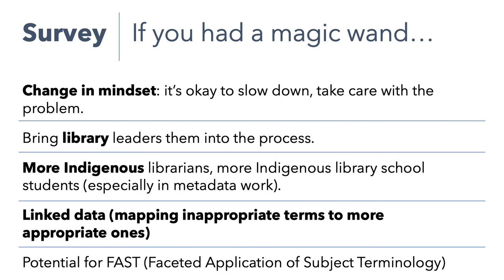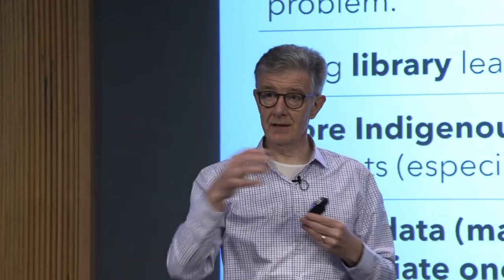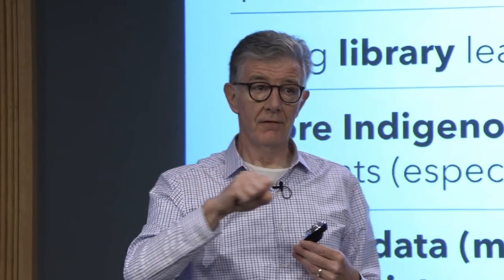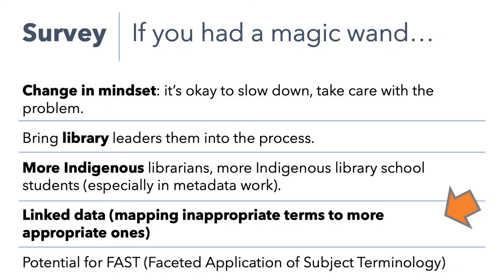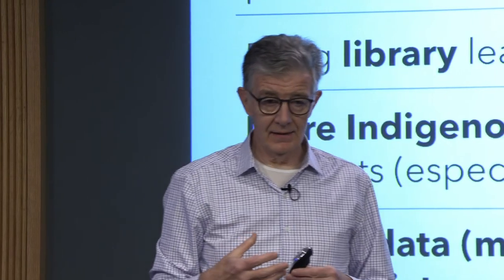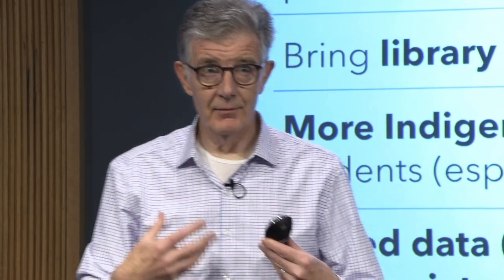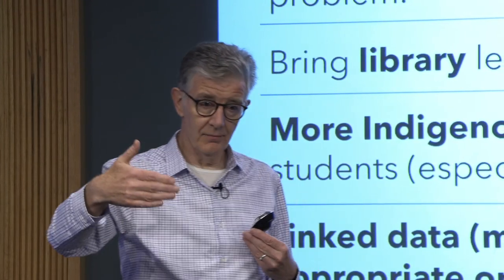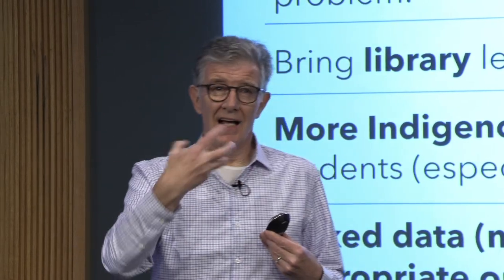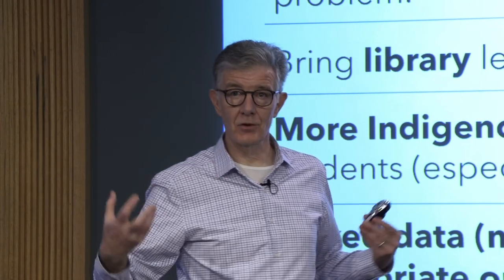Going back to the survey I mentioned, one of the areas identified was this idea of linked data — having more entified data — so that systems and services could be more sophisticated in terms of linking between vocabularies, identifying preferred terms, and doing various things. That's the coming together of these two interests. Linked data mapping inappropriate terms to more appropriate ones: the idea that one way of addressing issues in vocabularies is to systematically begin to map those terms to other terms, but to do that needing an infrastructure where that work can be captured so that it's made available more generally and can happen at scale.